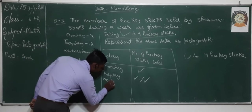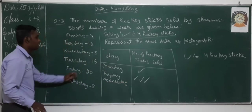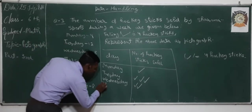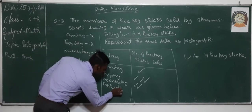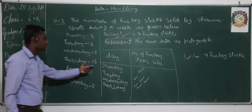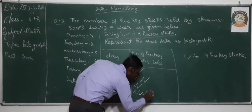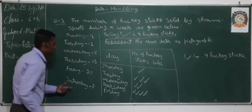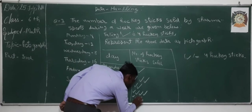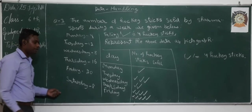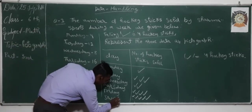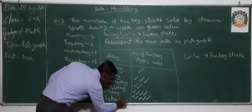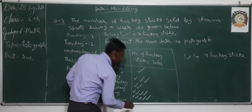On Wednesday, 8 hockey sticks are sold, so we represent 2 arrows. On Thursday, 16 hockey sticks are sold, so we write 4 arrows. On Friday, 20 sticks are sold, so we write 5 arrows. On Saturday, 8 hockey sticks are sold, so we represent 2 arrows.